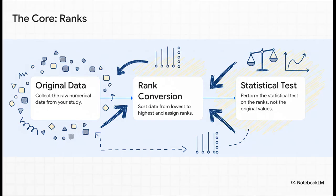So here's the secret sauce. How do these tests manage all this messy data? The answer is brilliantly simple. They ignore the actual values and focus on their ranks. You just take your data, sort it from smallest to largest, and then replace every single value with its rank, first, second, third, and so on. This one simple move completely neutralizes the effect of crazy outliers and skewed distributions. We're no longer asking how high are these numbers. Instead, we're asking which group consistently gets the higher ranks. It's a total game changer.